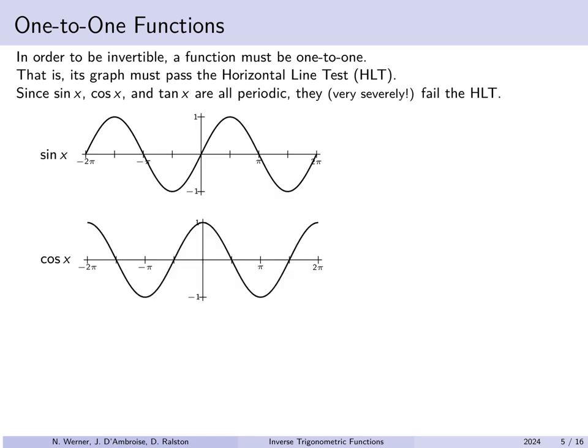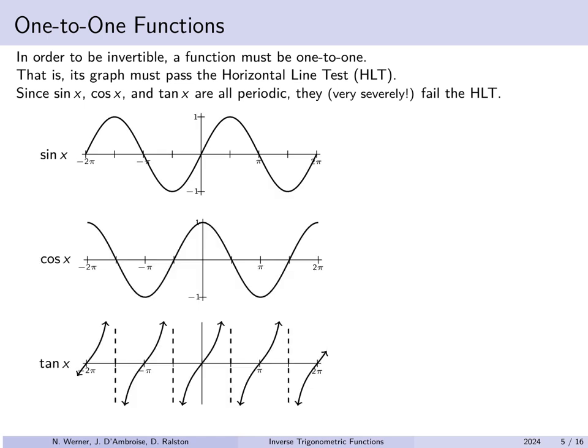Here's the graph of sine x, cos x, and tan x. If you draw horizontal lines, it's possible to intersect the graph infinitely many times, definitely more than once. So these graphs all fail the horizontal line test, so you might think there is no inverse function — and that's technically true at this stage.